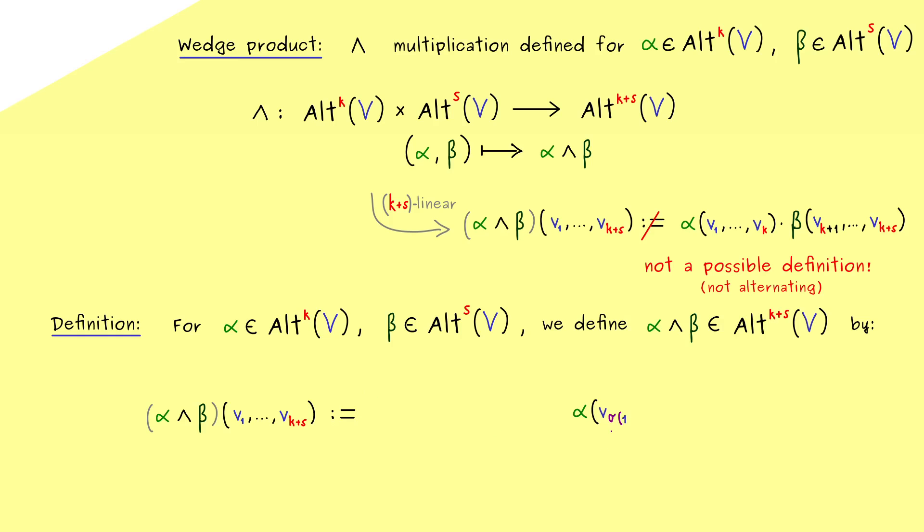Therefore, I would say, let's start with that and let's call the permutation sigma. Therefore, the first input here is v with index sigma of 1, and this continues until we have v_sigma(k). So you see, as before, these are the k vectors we put into alpha.